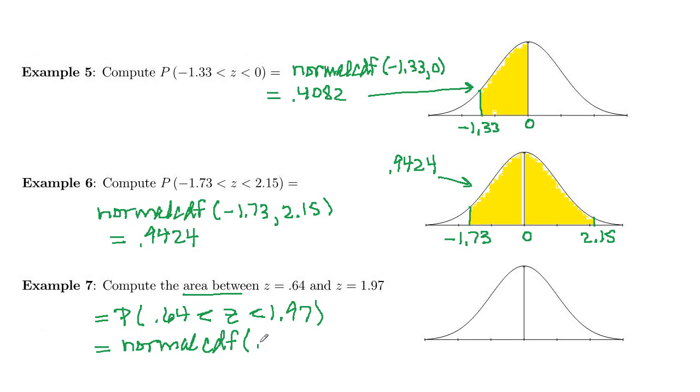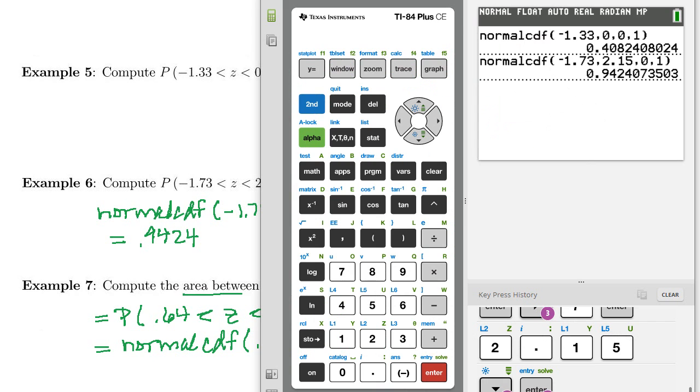And our lower cutoff is 0.64, and our upper cutoff is 1.97. Now let's go ahead and enter that in. And you should double check to see that you're getting the same answers as me.